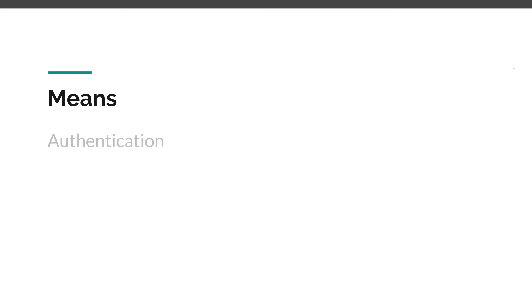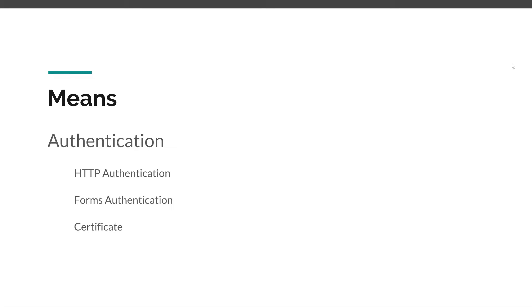In terms of how exactly these things are implemented — authentication can be implemented in multiple ways. We can have HTTP authentication, we can have forms authentication which is the most common, where you type in your username and password in a login form, we can have authentication based on a certificate, or we can use tokens for authentication. Each method is different, but the outcome is the same.